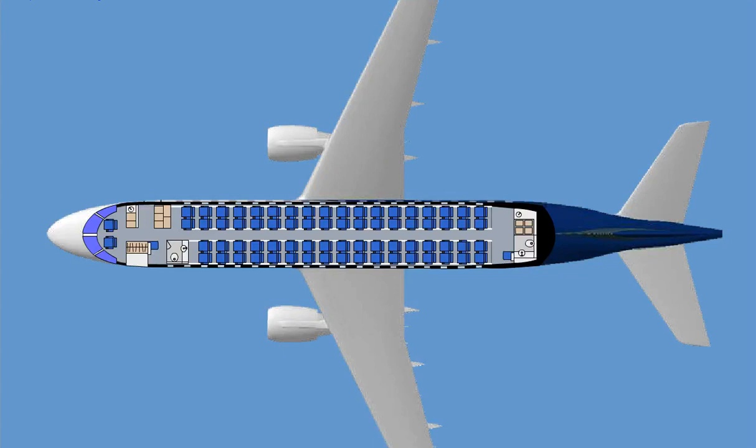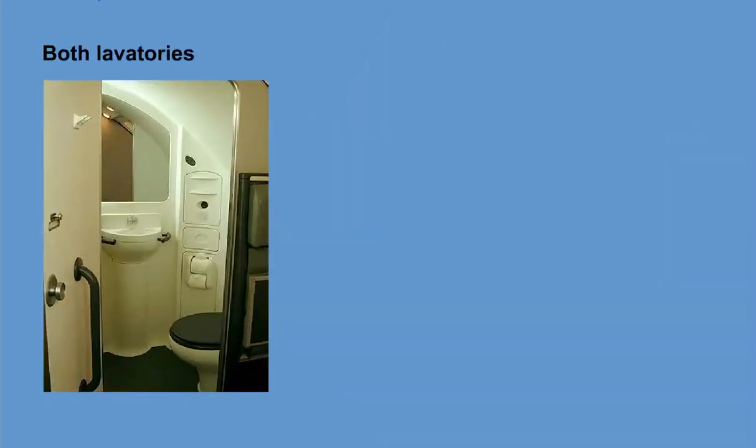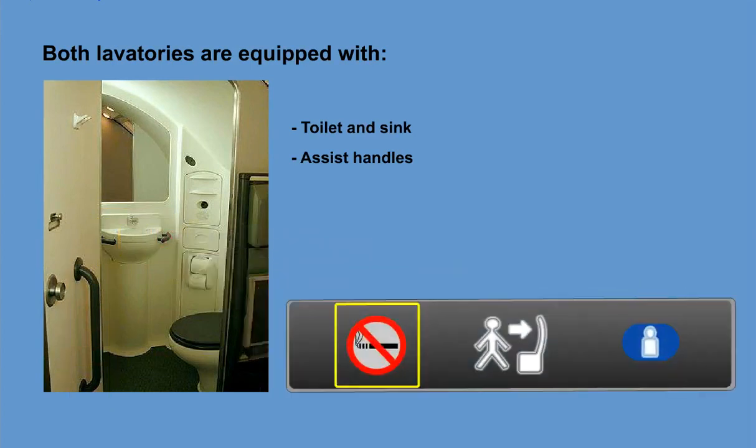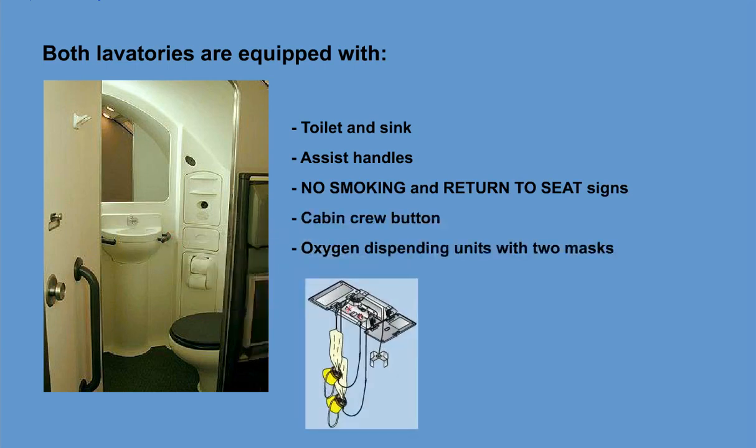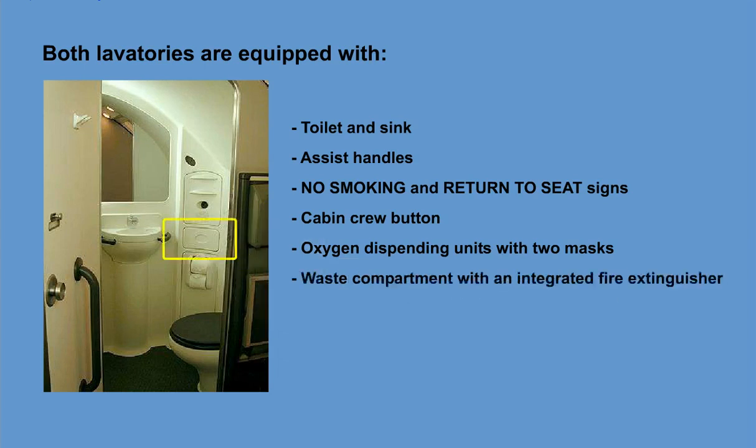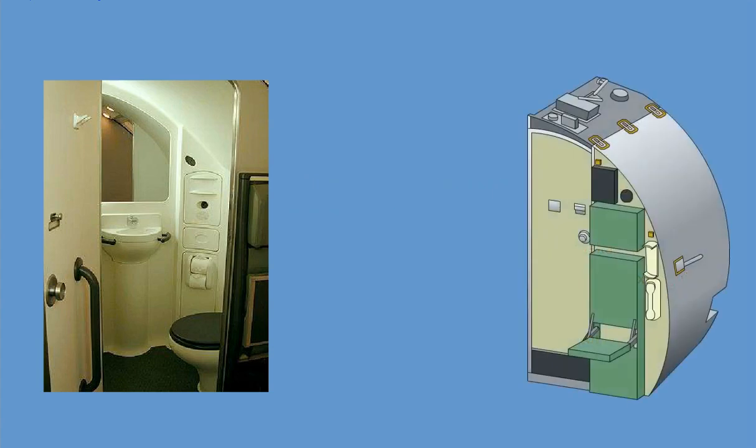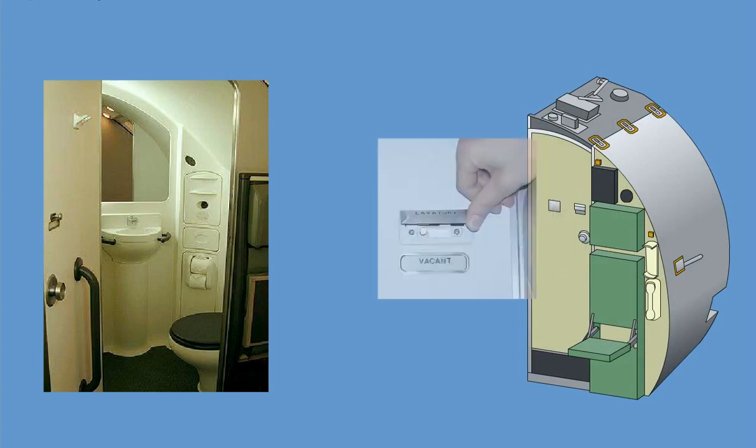The Embraer 170 standard configuration has two lavatories, one in the forward area and another in the aft area. The forward left-hand lavatory is located just aft of the left-hand flight deck bulkhead. The aft lavatory is located just aft of the aft passenger door. Both lavatories are equipped with a toilet and sink, assist handles, no smoking and return to seat signs, a cabin crew button, oxygen dispensing units with two masks, a waste compartment with an integrated fire extinguisher, and a smoke detector. A baby changing table can be found in the rear lavatory. The lavatory doors are designed to prevent anyone from becoming trapped inside the lavatory. The door can be unlocked from either side.